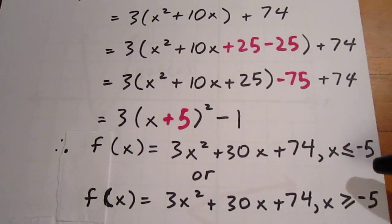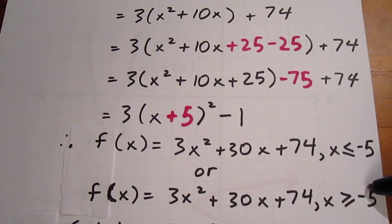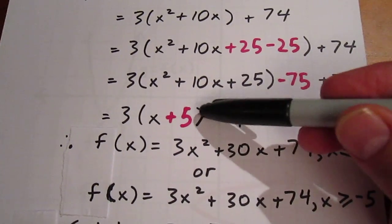Or, we could restrict the domain by saying x ≥ -5, as long as we choose the x value at the vertex.